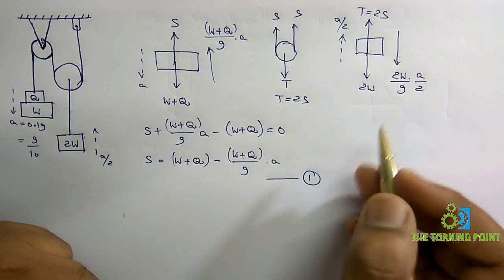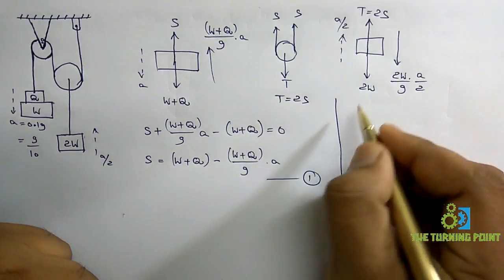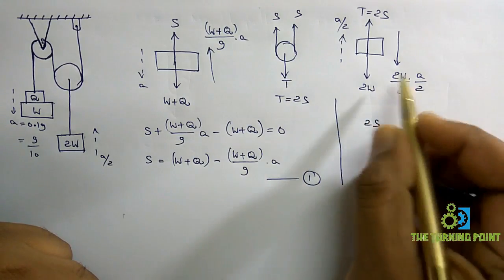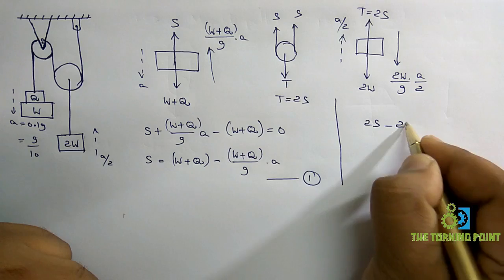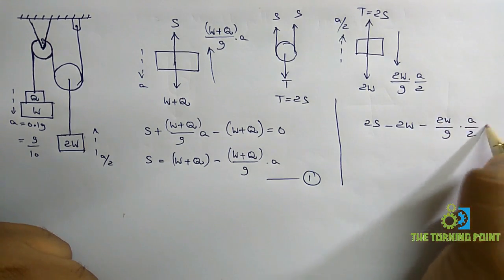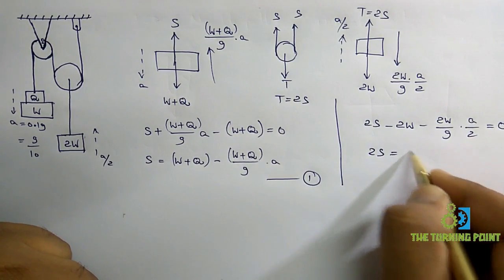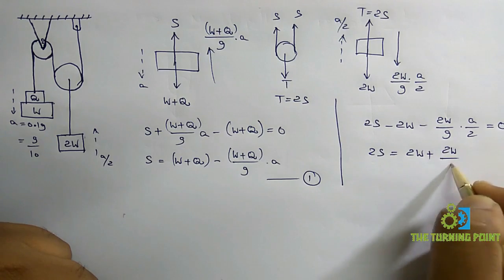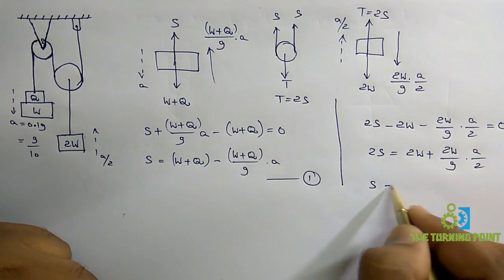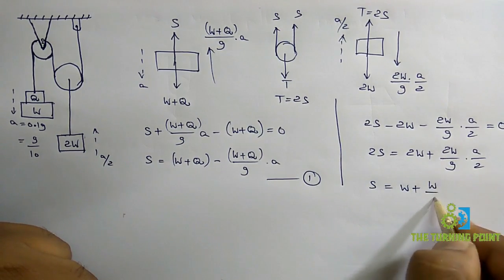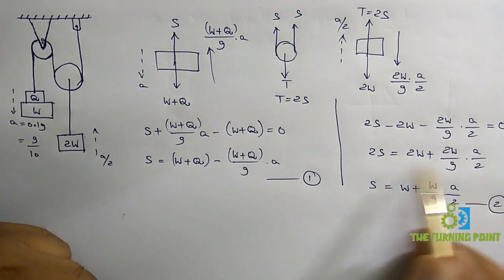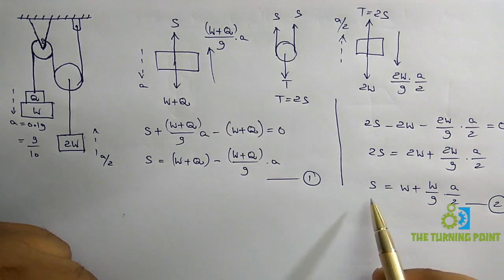Applying sigma Fy equal to 0: 2S acting vertically upwards, minus 2W vertically downwards, minus 2W/G times A/2 equals 0. So 2S equals 2W plus 2W/G times A/2. Dividing by 2, S equals W plus W/G times A/2. This is equation 2.